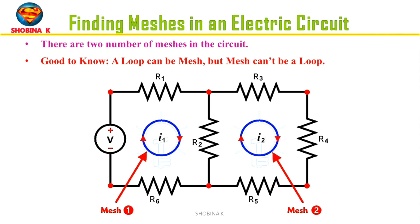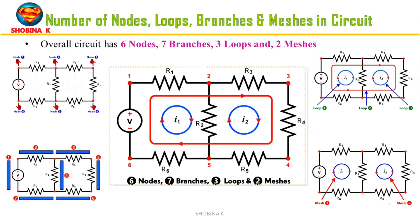And in this figure we have two number of meshes. Note that a loop can be a mesh but mesh cannot be a loop. So in this circuit, we have six nodes, seven branches, three loops, and two meshes.